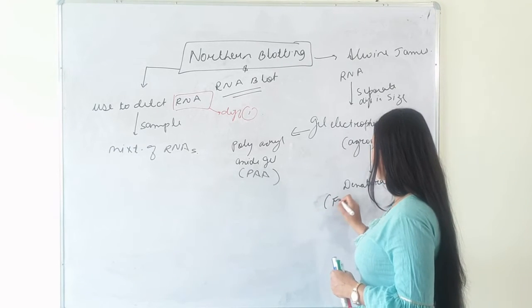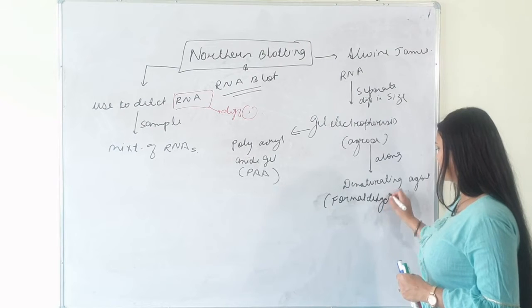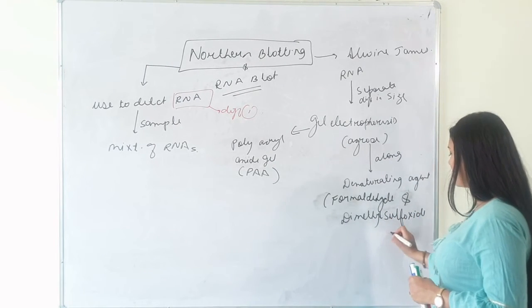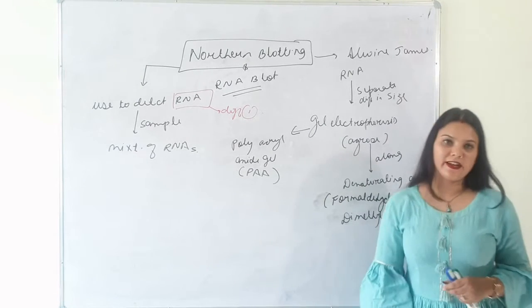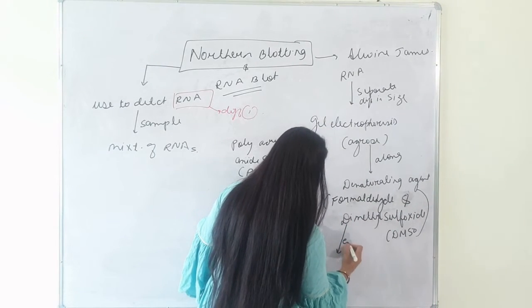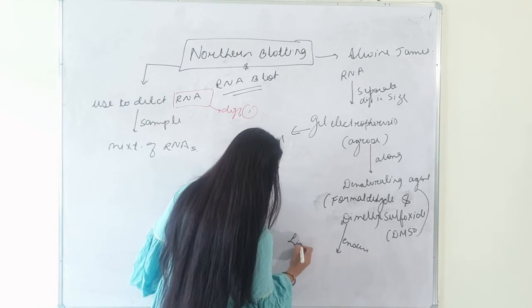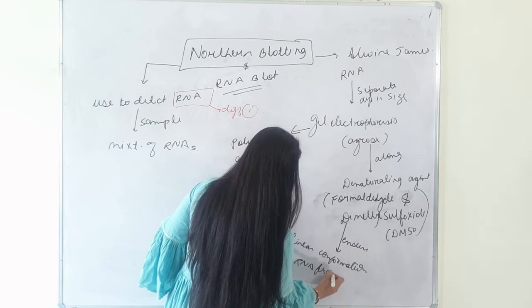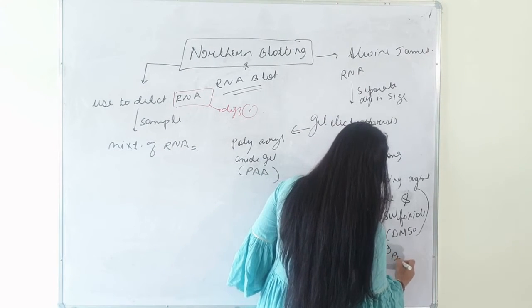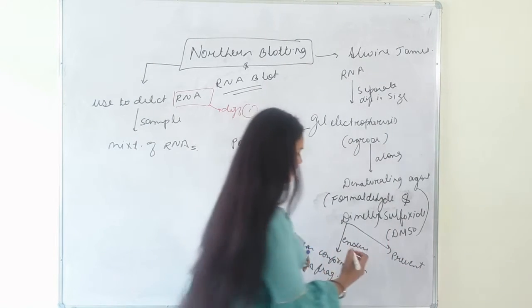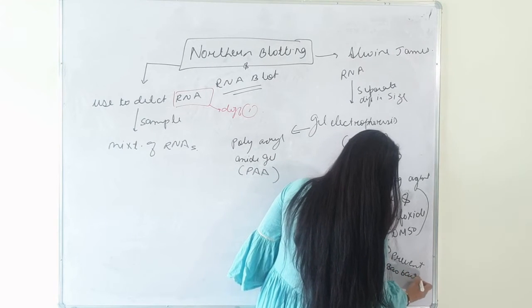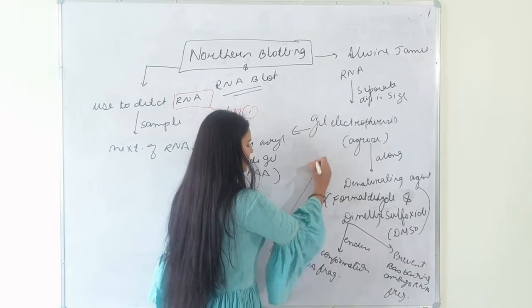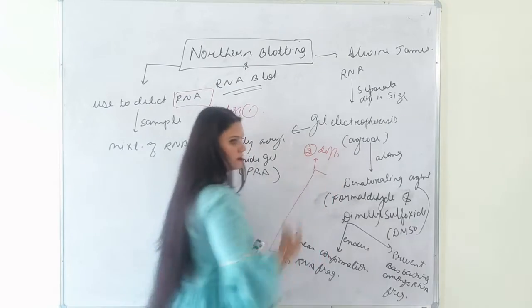This is the main purpose of using denaturation agent over here. Here, basically we use formaldehyde and dimethyl sulfoxide, which is also called as DMSO, as denaturation agent to ensure the linear conformation of RNA fragments or to prevent inter- and intramolecular base pairing. And this is the second difference between the two techniques, southern and northern blotting.